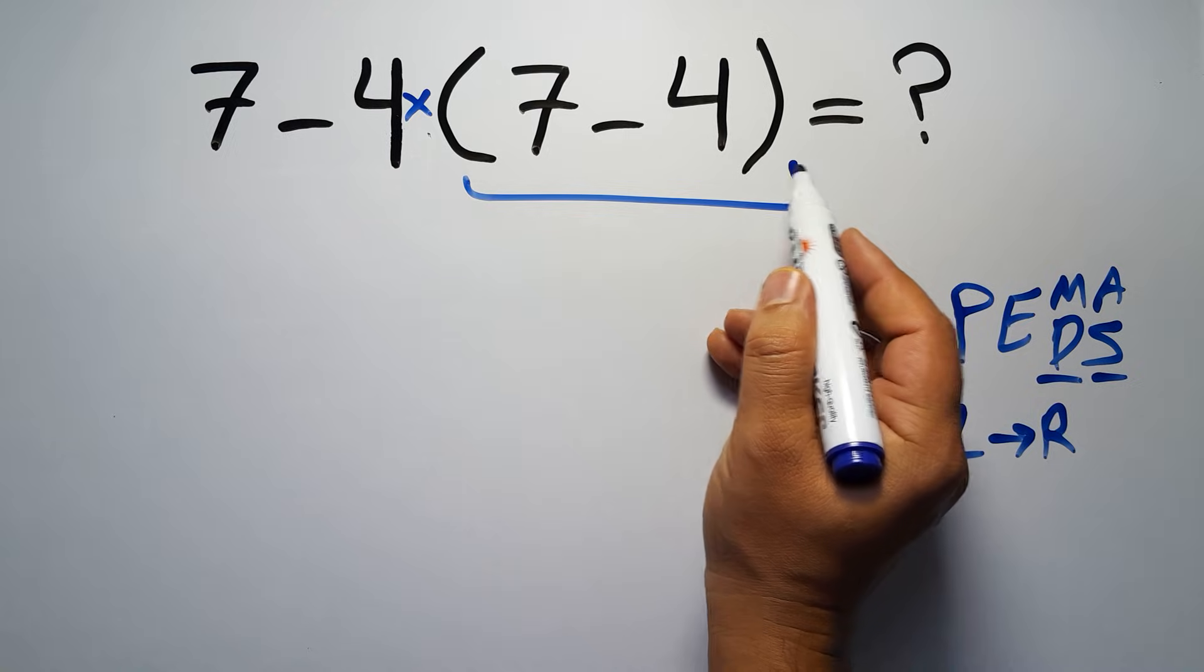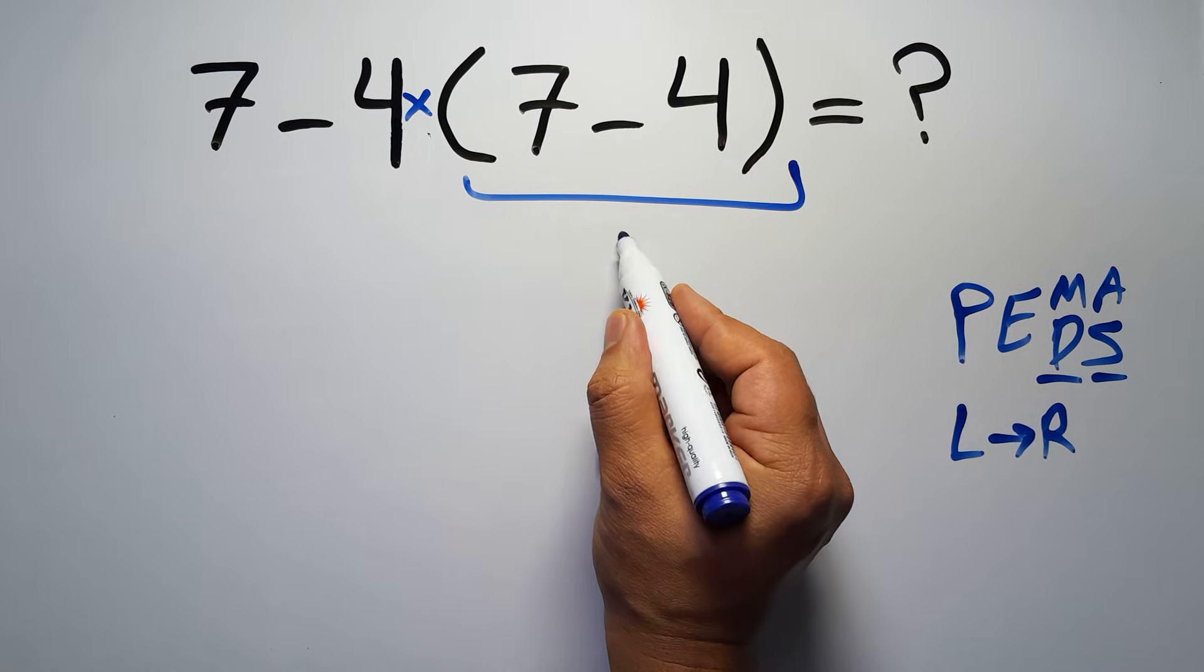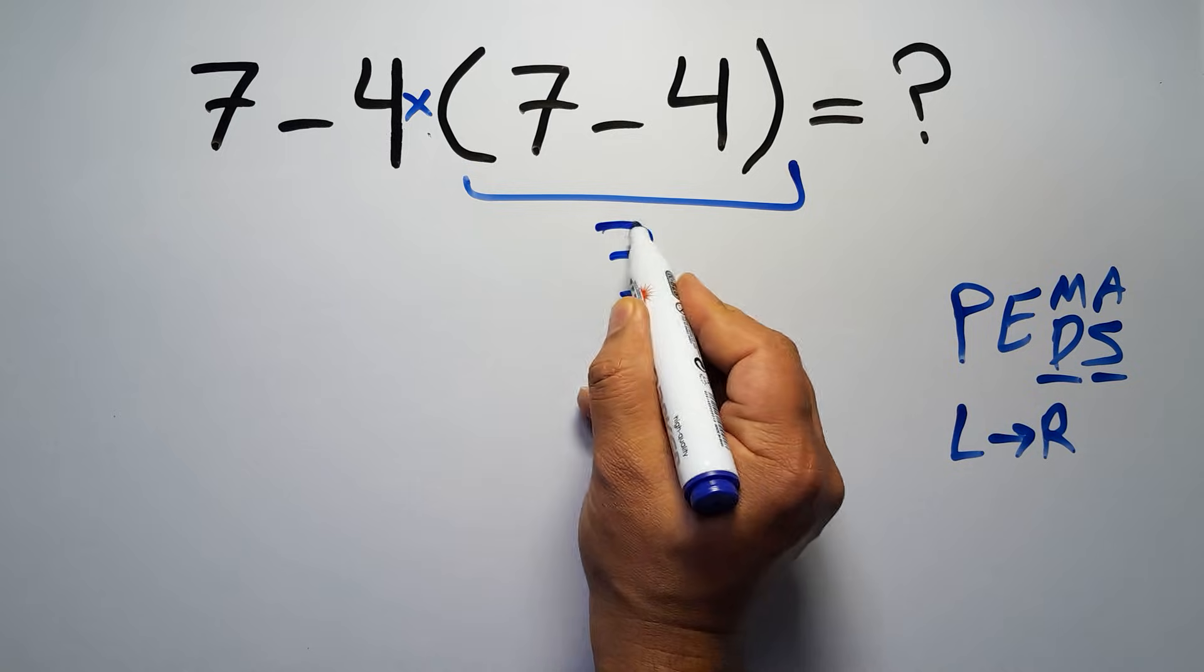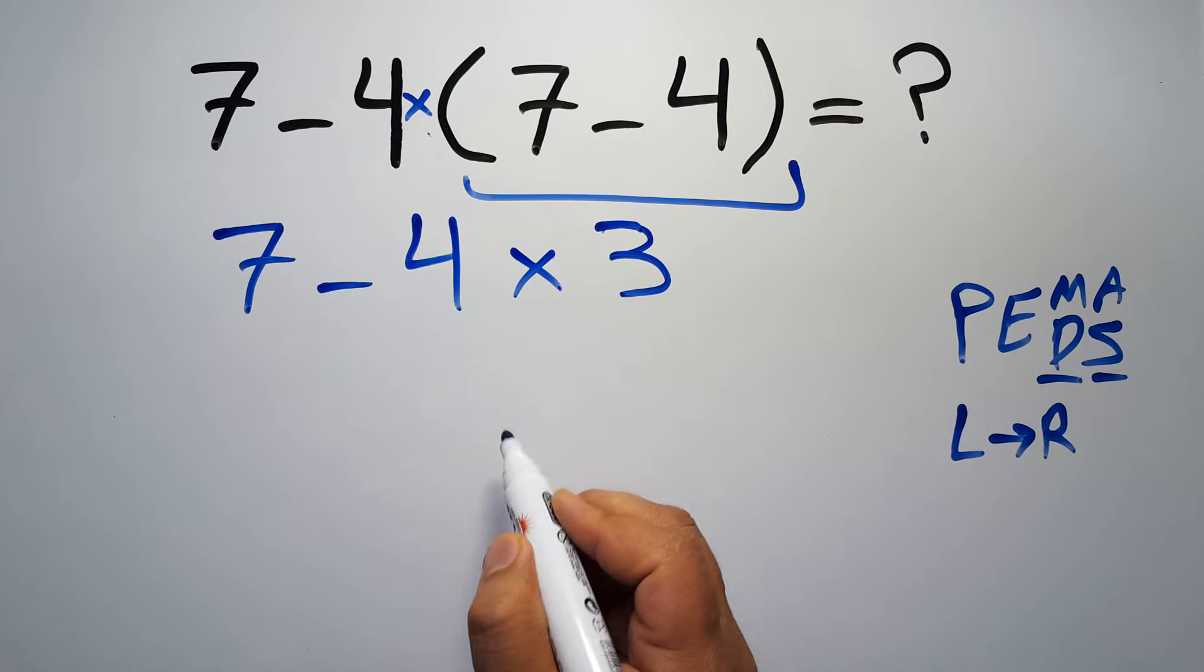So first we have to do this parentheses. Inside this parentheses, we have 7 minus 4, which gives us 3. So 7 minus 4, then times 3.